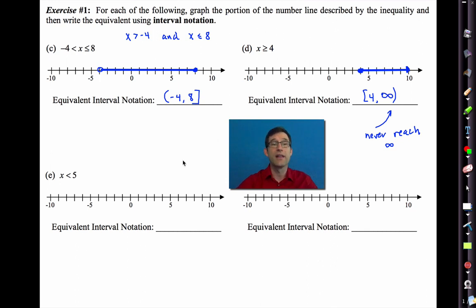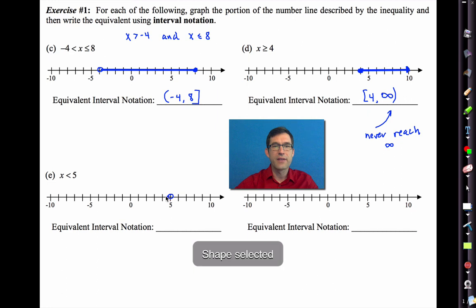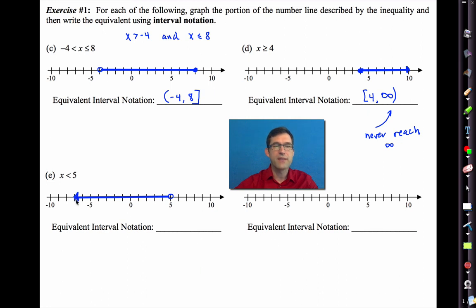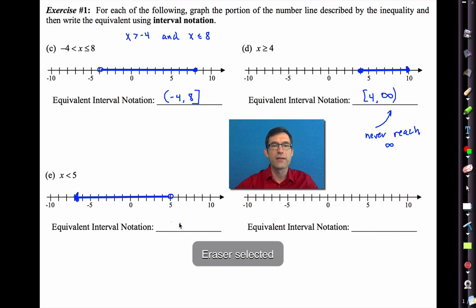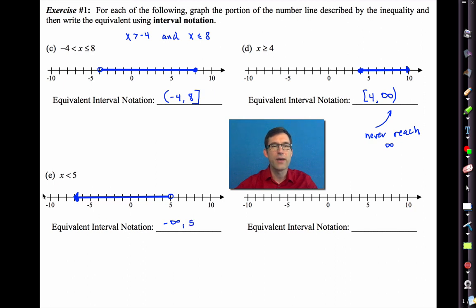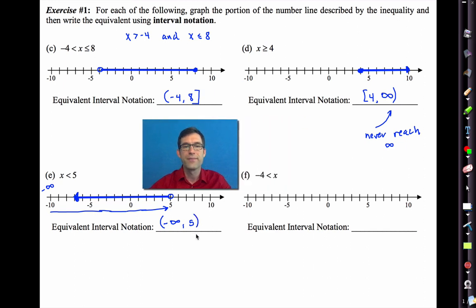In letter E we have x is less than 5. We put an open circle on 5 and draw a line extending to the left with an arrow. A lot of people want to write 5 as the first number — but we must move from left to right. So technically the first number in our interval is negative infinity, and the interval goes all the way up to 5. Negative infinity appears way out to the left — everything is colored from there to 5. Just like positive infinity, negative infinity is never included, and in this case neither is the 5.